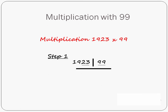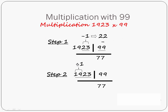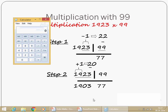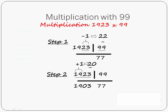Now a 4-digit example: 1923 × 99. Since 99 has 2 digits, take the last 2 digits of 1923, that's 23. Subtract 1 to get 22. Subtract each digit from 9: 9−2=7, 9−2=7. Last part: 77. Remaining digits are 19. Add 1 to get 20. Subtract 20 from 1923: 1923−20=1903. So the answer is 1903 77, that is 190,377. Let us verify: 1923 × 99 = 190,377.